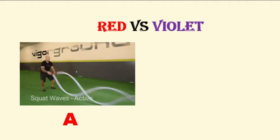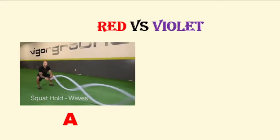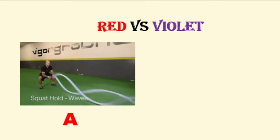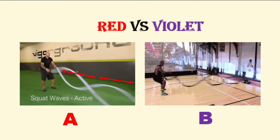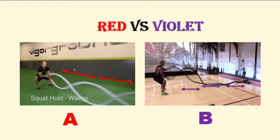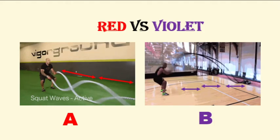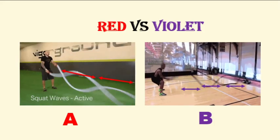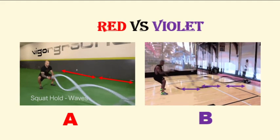Let us observe the video of man A in his battle rope routine. He makes waves by moving or vibrating the ropes, producing longer wavelengths. In the second video, man B is also creating waves in his battle rope routine, but he produces shorter wavelengths and moves much faster than man A. Who gives more energy — man A or man B? Man B produces more energy because the waves in his ropes are shorter and faster.